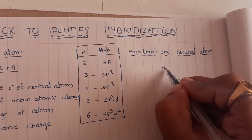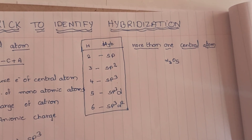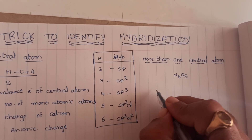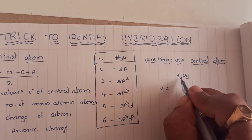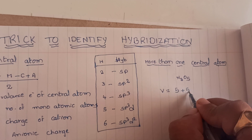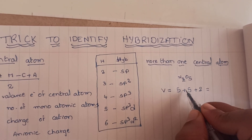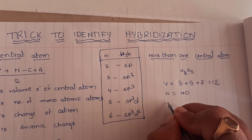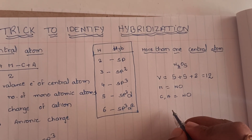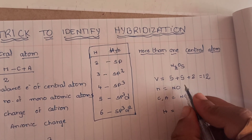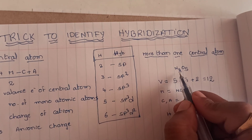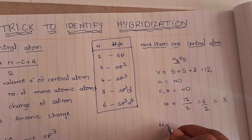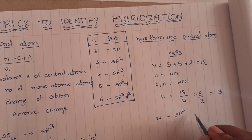Now, if there are more than one central atoms — for example dinitrogen pentoxide N₂O₅ — two nitrogen atoms are present. What you do is add additional electrons for each central atom. Each nitrogen gives 5 electrons, two nitrogens give 10, plus 2 for the number of atoms equals 12. No monoatomic atoms, no charge. So hybridization number equals 12 divided by 2 equals 6, then divide by the number of atoms 2, equals 3 — each nitrogen undergoes SP2 hybridization.